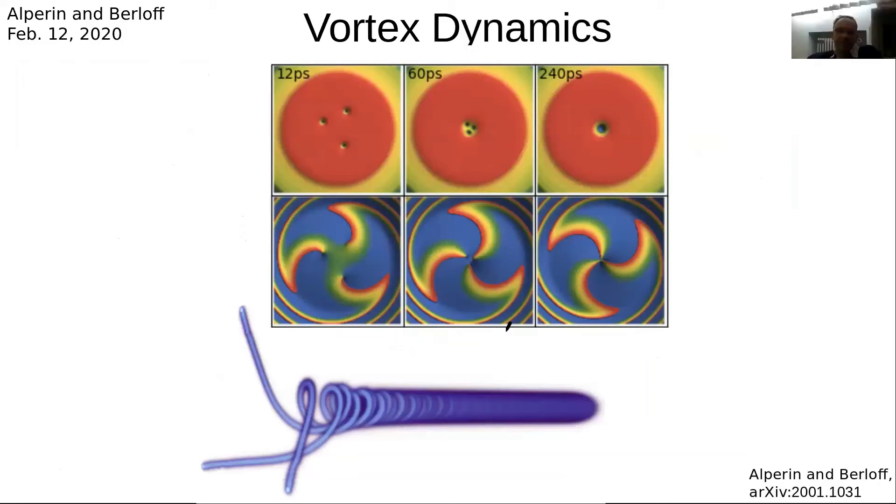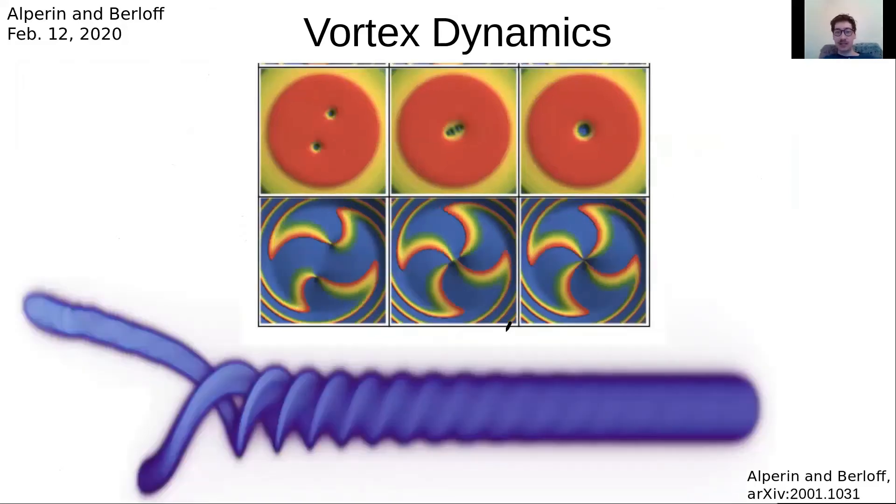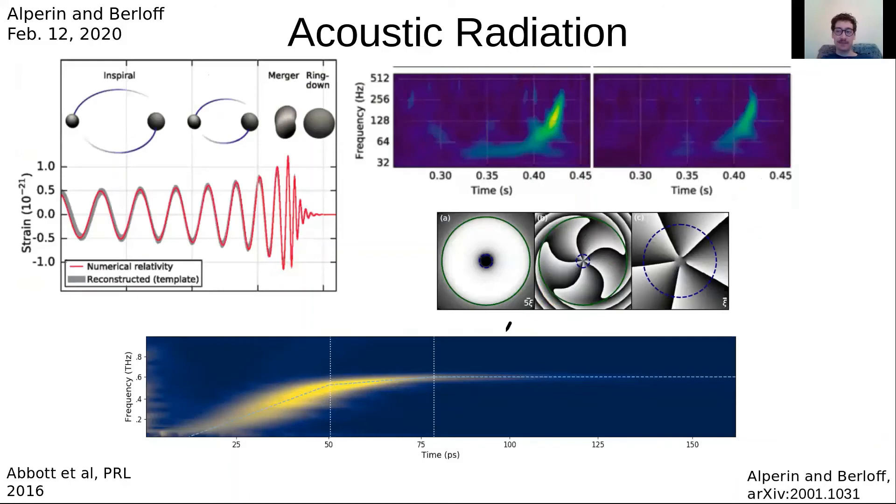So we can also imprint these vortices and see their dynamics. Here, imprinting three vortices which coalesce, or two pairs of double vortices which again coalesce.